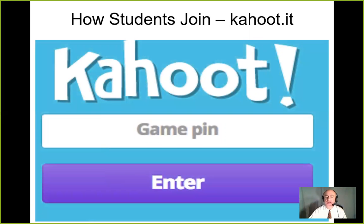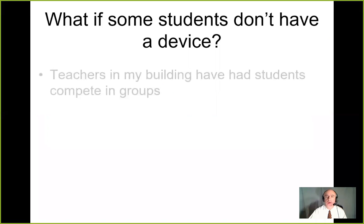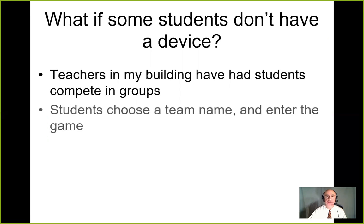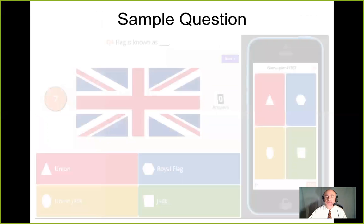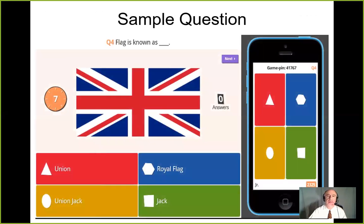That's what the screen looks like on their device — they simply put in the PIN number of the game and hit enter. What if students don't have a device? Teachers in my building have students compete in groups: students choose a team name and then enter the game. One thing to remember is that on their device, students cannot see the question — all they have are the answer choices. So you must have a computer with a projection screen and projector so players can see the questions.